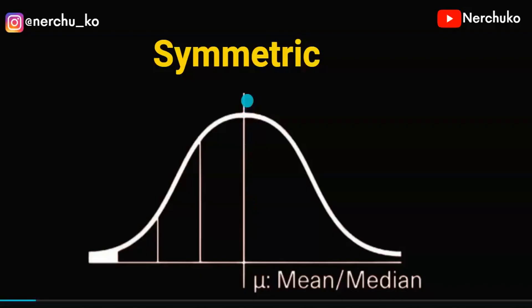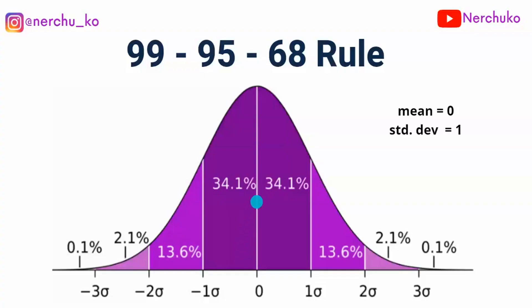Let's talk about Gaussian distribution. We have one symmetric bell curve plotted in Gaussian distribution. We need to take the intervals — this is very important. Standard normal distribution is equal to Gaussian distribution. In standard normal distribution, the mean is zero and the standard deviation is one.